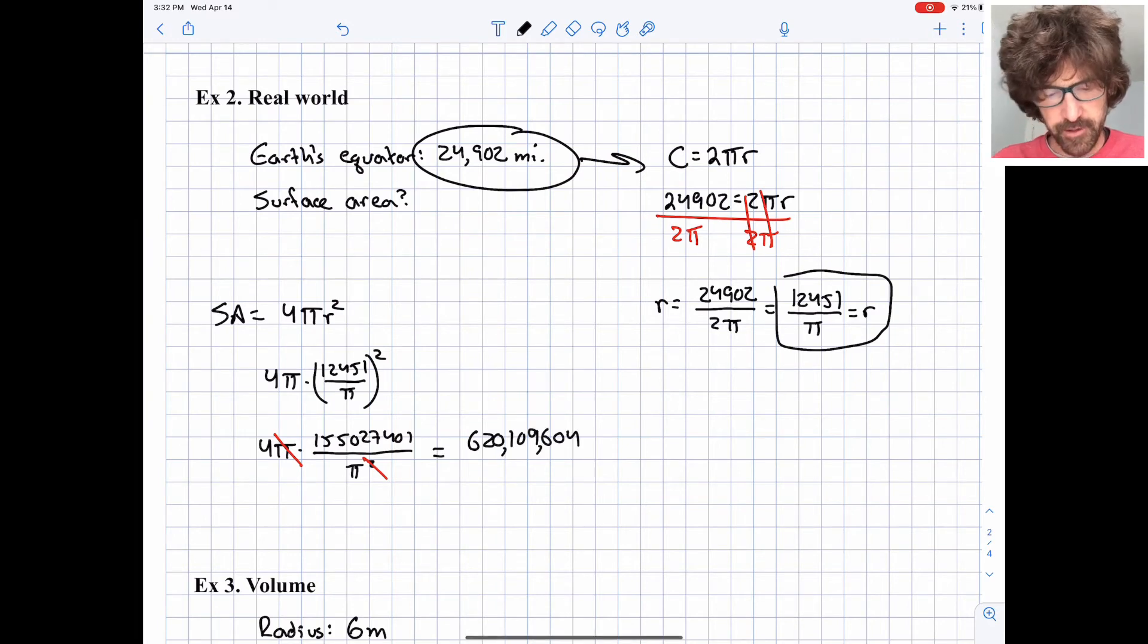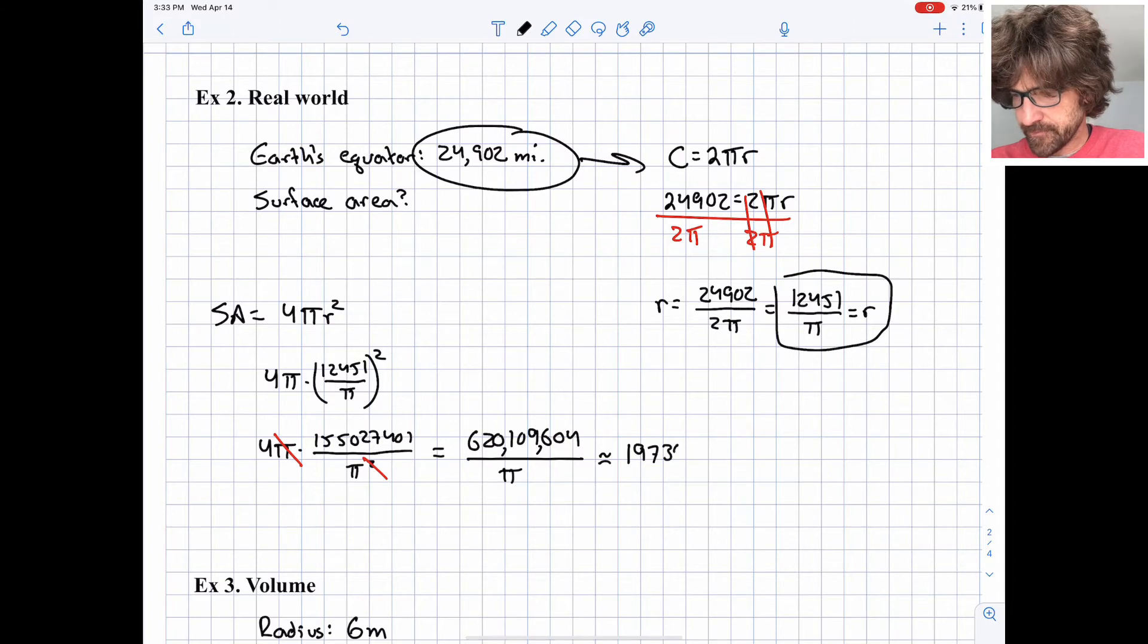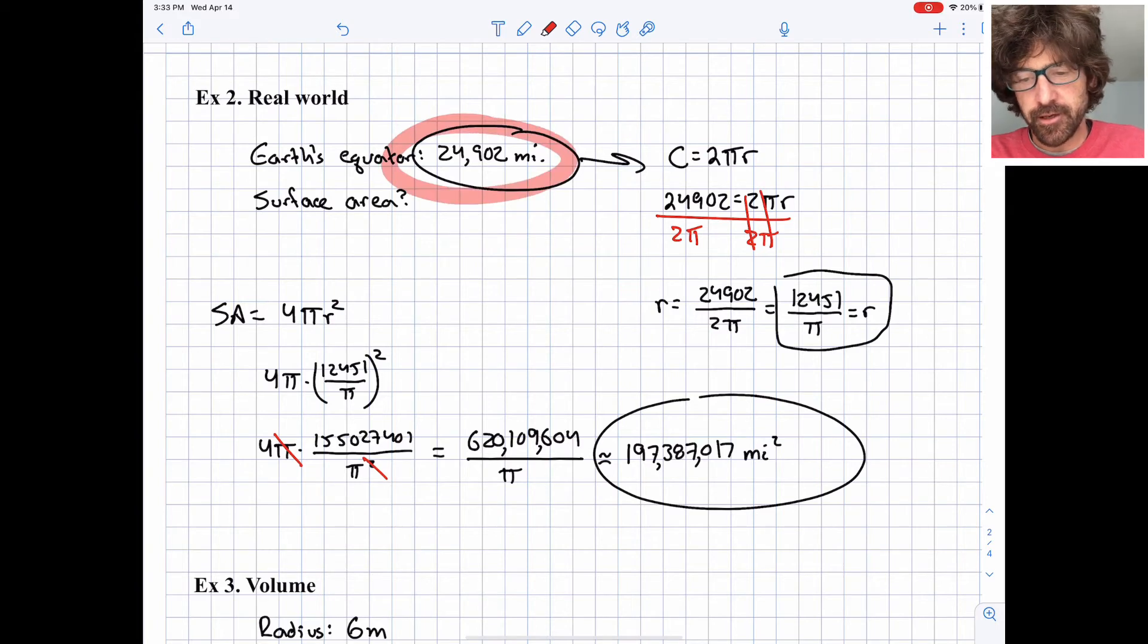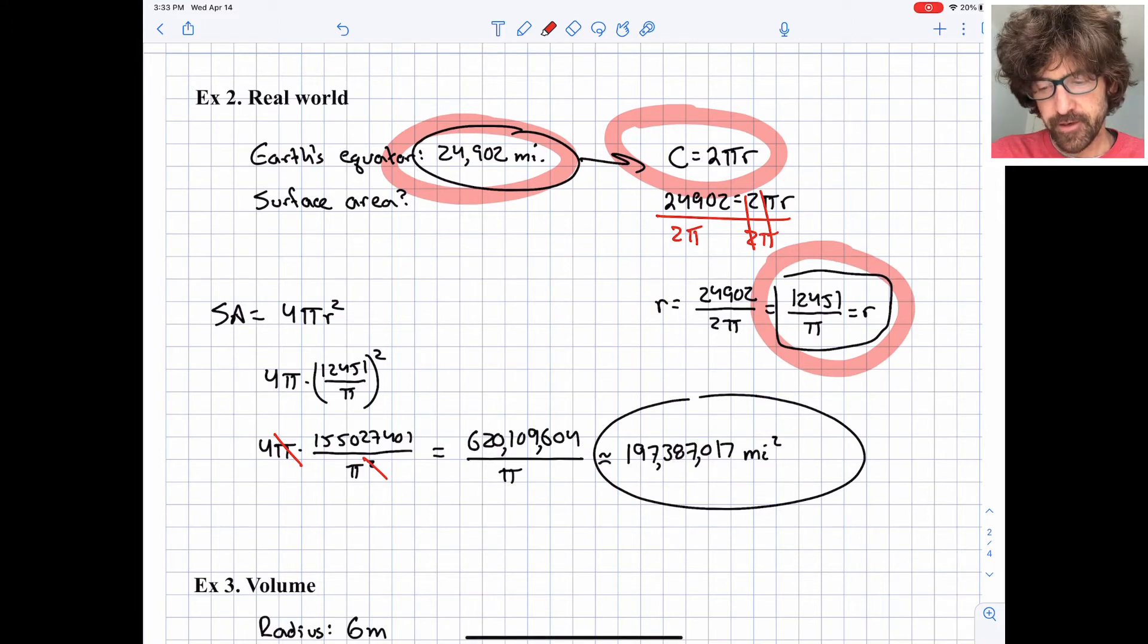That's roughly 620 million divided by π would be the exact answer for the surface area of the Earth in terms of square miles. But let's divide it by π. I get a decimal approximation: 197,387,017. So that's about 197 million square miles would be the surface area of the Earth. I encourage you to go Google that, see how close we got. The tricky piece here was converting the circumference of the Earth, using the circumference formula into the radius of the Earth, and then we could apply the radius into our surface area formula.